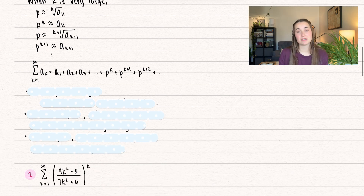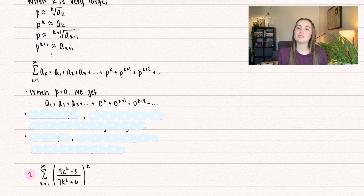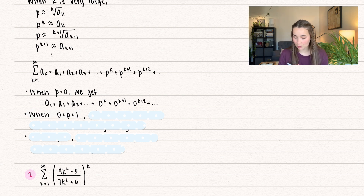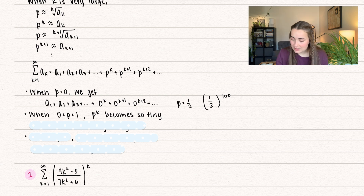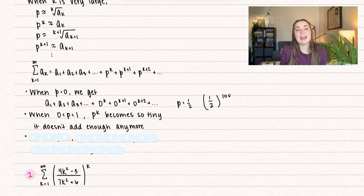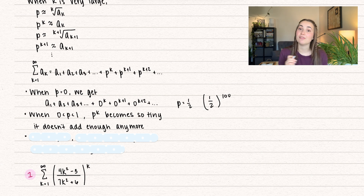Let's think about that in terms of our results. If p is equal to 0, then we get those first few terms added together and then we're just adding 0, which is why it converges — if we're not adding anything anymore, it converges. If p is between 0 and 1, then p raised to some power becomes smaller and smaller. Say p equals one-half: one-half to the power of 100 gets really, really small. Those terms become so tiny that the series is bounded above and converges to a number, because it doesn't add very much anymore.